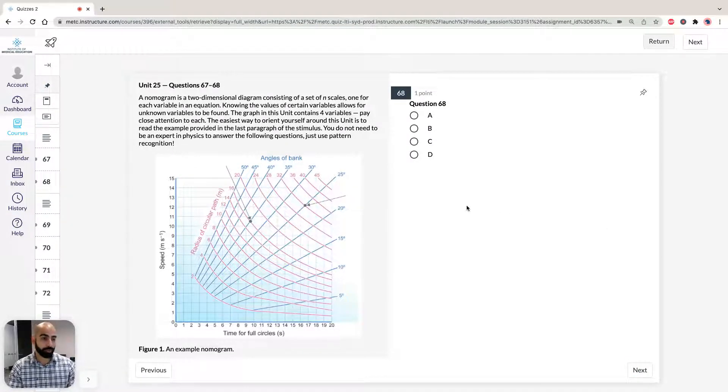It says a bird of mass 2 and a half kilograms. You might think you need to use the mass here because they give you the equation for centripetal force, but I'll show you why you don't need to. It says it's soaring in a circular path with a radius of 10 meters. So let's write that down. So our radius is 10 meters. The magnitude of centripetal force acting on it is equal to the magnitude of the weight.